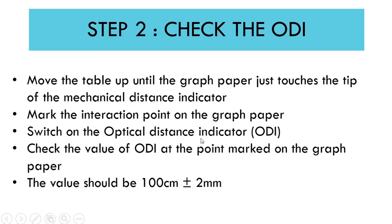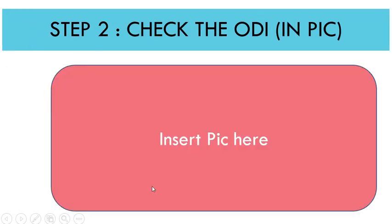Now switch on the optical distance indicator and check the ODI value at the point marked on the graph paper. The value should be 100 centimeters plus or minus 2 millimeters — this tolerance comes from TG-142. This is the check at the isocentric value.